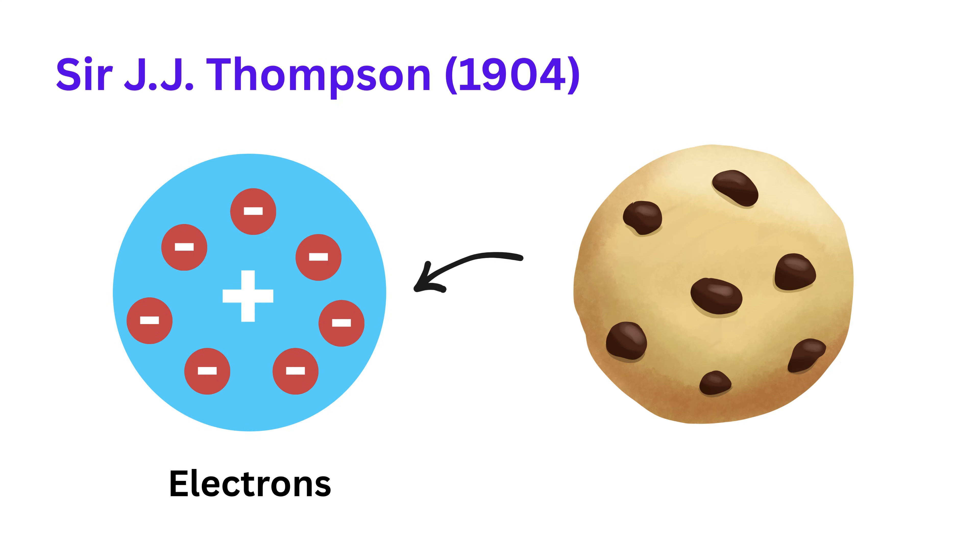So he imagined the atom like a soft dessert, a pudding with raisins. The positive charge was like the soft pudding, and the negative electrons were like little raisins stuck inside. This model was called the plum pudding model. It was a creative idea at the time, but new experiments soon raised big questions.